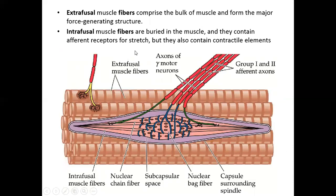There are two important types of muscle fiber: extrafusal and intrafusal. Extrafusal muscle fibers form the bulk of the muscle — they are the contractile, force-generating units. Intrafusal fibers are buried inside the muscle and contain afferent receptors for stretch. They also have some contractile elements. Extrafusal fibers are the bulky part of the muscle, while intrafusal fibers are seen within them.